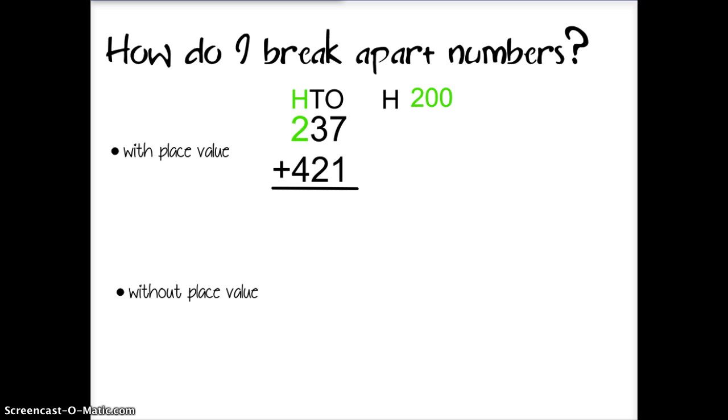First I'll add two hundreds plus four hundreds for a sum of 600. Next I have three tens or 30 plus two tens, 20 for a sum of 50.